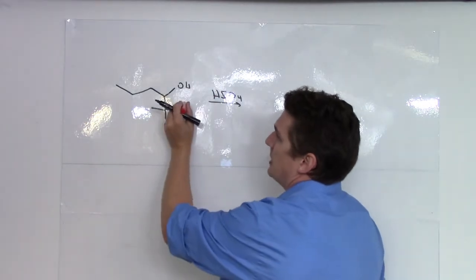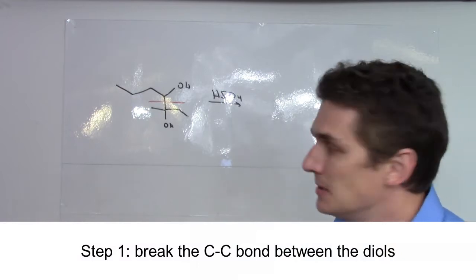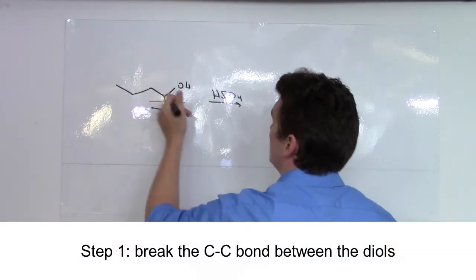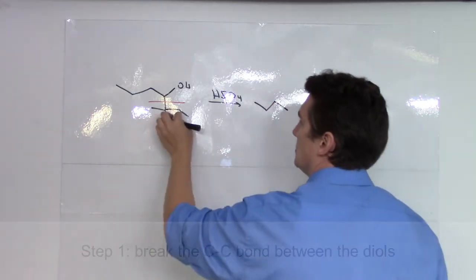So what we're going to do is we're going to break the bond between the carbons connecting the vicinal diols. So we've got one, two, three, four carbons. And this one we've got one, two, three, four.